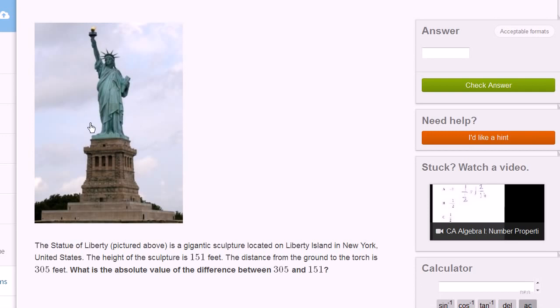So this distance right over here is 151 feet. So it's like a 15-story building or more, or about a 15-story building. The distance from the ground to the torch is 305. So from here to there is 305 feet. What is the absolute value of the difference between 305 and 151?